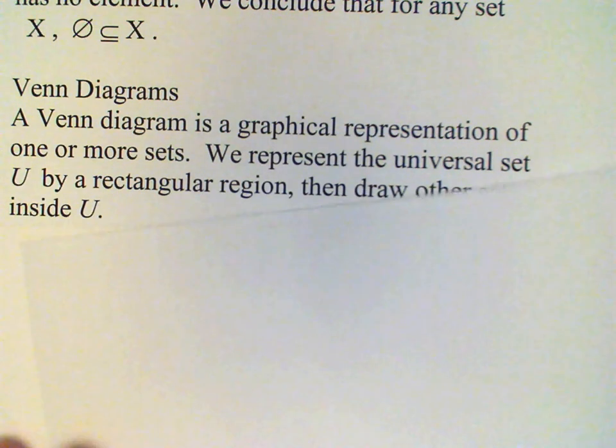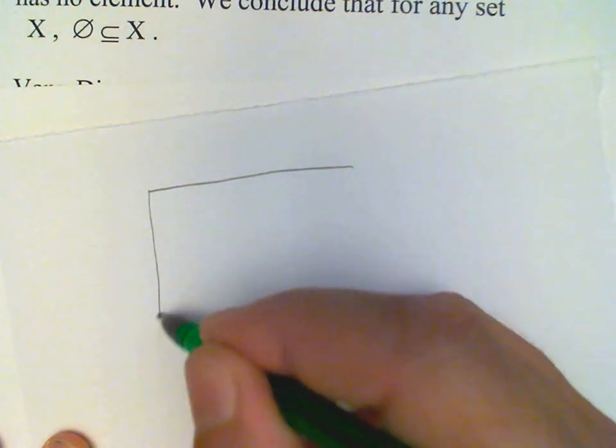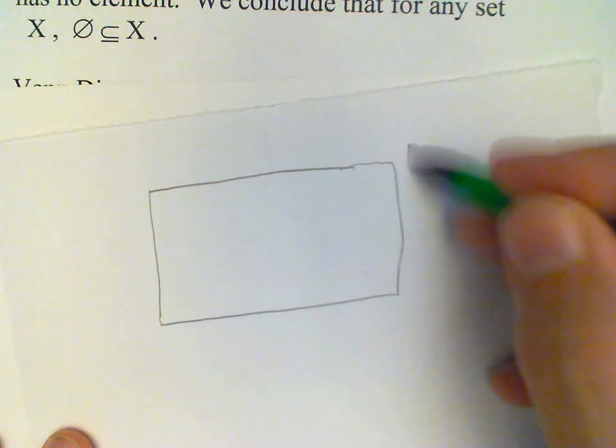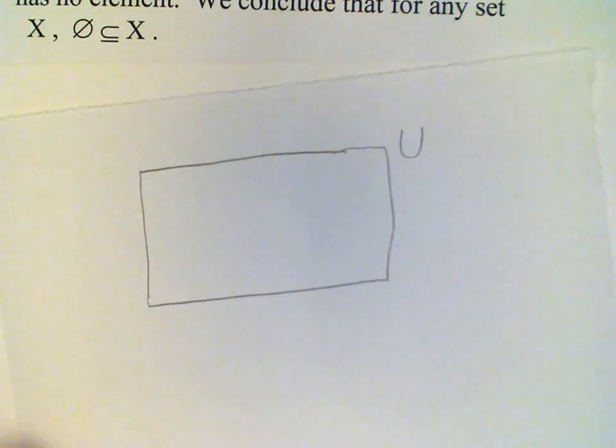and what we do usually is to draw a rectangle to represent the universal set. Okay, so if we have some universal set in mind, then that is represented using a rectangle,